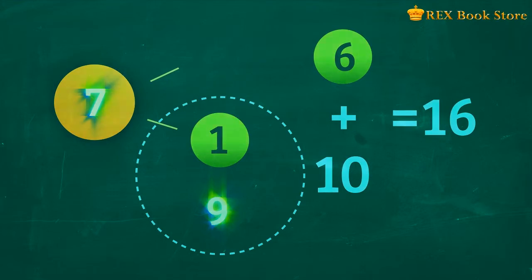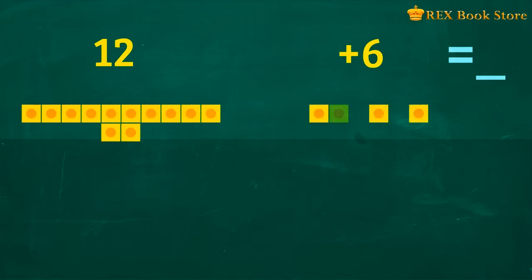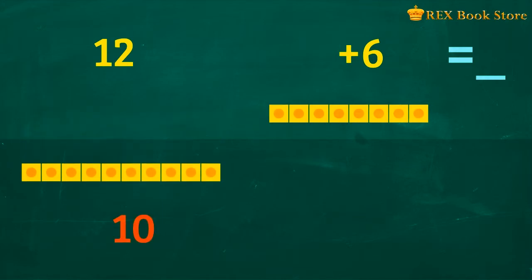Another way of adding is regrouping. Take a look at this addition sentence. 12 plus 6 is equal to how many? To represent the numbers, we have 12 units and 6 units. We need to regroup the larger number so that we have only 10 units.